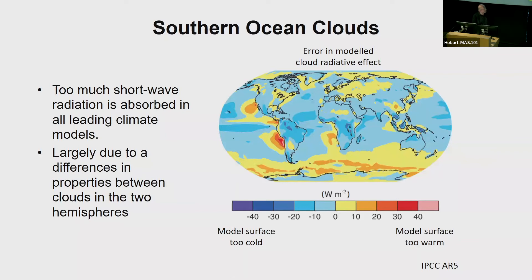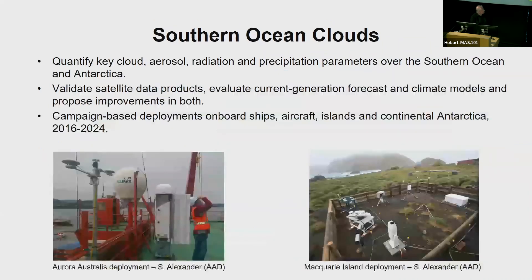Getting the cloud field right in climate models really helps fix a number of issues, including sea ice and Southern Ocean temperature, which in turn underpins the global ocean conveyor belt. Our measurements include work on the Aurora Australis, a field campaign on Macquarie Island with US Department of Energy instruments, and an aircraft program flown out of Hobart a couple of years back that got in situ measurements on the clouds themselves.